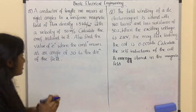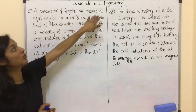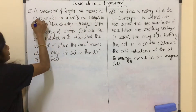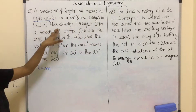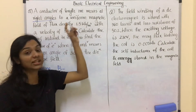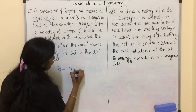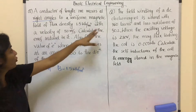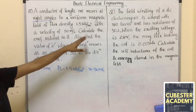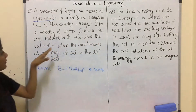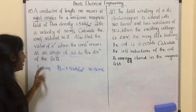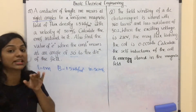The question is: a conductor of length 1 meter moves at right angles to a uniform magnetic field of flux density B equal to 1.5 weber per meter square, with a velocity of 50 meter per second. Calculate the induced EMF in it. Also find the value of induced EMF when the conductor moves at an angle of 30 degrees to the direction of the field.